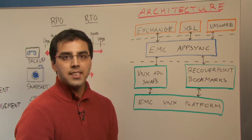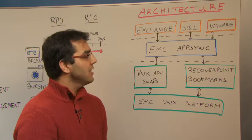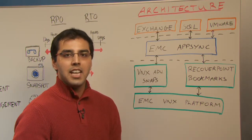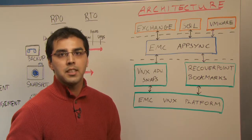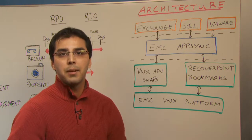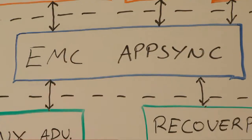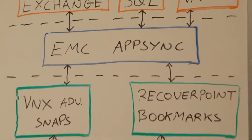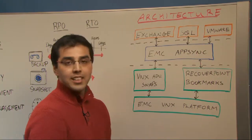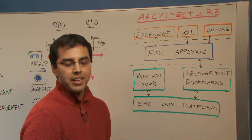AppSync makes it easy for application owners to protect their application. It provides a concept of service plan, which abstracts the underlying complexities of their application technologies and allows the application owner to focus on what he cares about the most — the application. For example, suppose your production database goes down, or your data gets corrupted, or you accidentally delete a file. No worries. You can use EMC AppSync along with RecoverPoint to restore to a point in time before the crash actually happened, getting your production data up and running or restoring files you accidentally deleted.